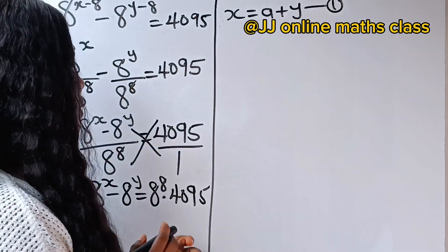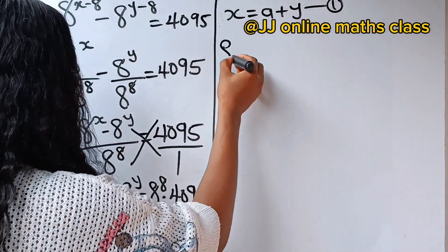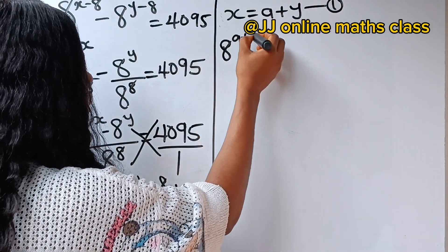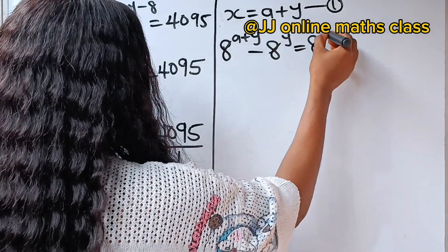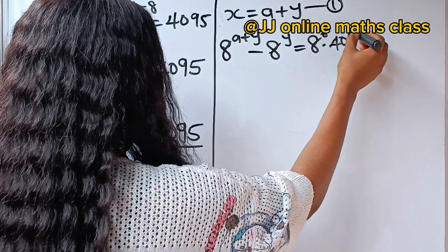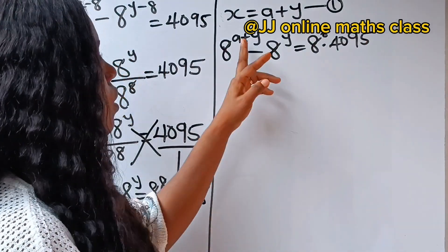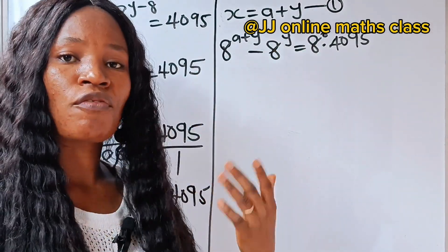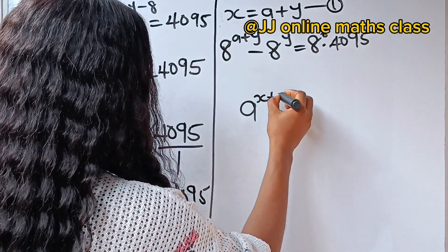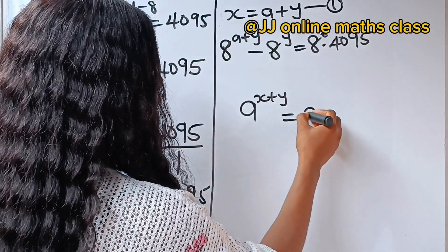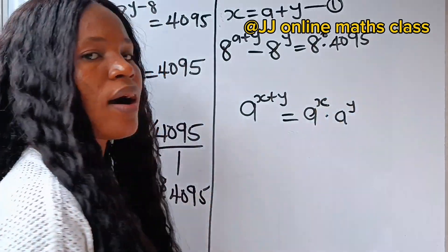That means we can substitute this for x here. So we can write this as 8 to the power of a plus y, minus 8 to the power of y, is equal to 8 to the power of x times 4,095. Now recall the law of indices that states that a to the power of x plus y is the same thing as a to the power of x times a to the power of y.